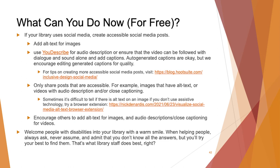What can you do now for free? If your library uses social media, create accessible social media posts. Add alt text for images. Use YouDescribe for audio description, or ensure that video can be followed with dialogue and sound alone. Add captions — auto-generated captions are okay, but edit them for quality. For tips on creating more accessible social media posts, a link with more information is provided. Only share posts that are accessible — for example, images that have alt text, or videos with audio description and/or closed captioning.